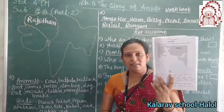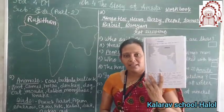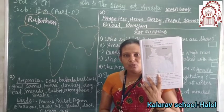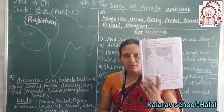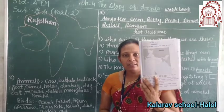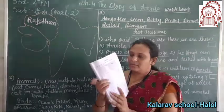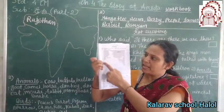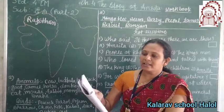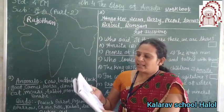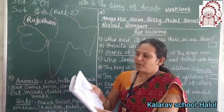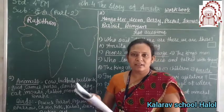Here the maps of India are given. Now you open the book. You see here the map of India. Find Rajasthan in the map of India given below and show it in a different color.